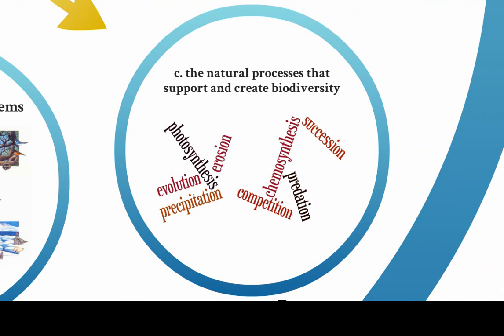It's that variety that's so important to the earth as a complete ecosystem. When we talk about biodiversity, we also include the natural processes that support and create biodiversity — things like competition, photosynthesis, succession, predation, and physical processes like precipitation and erosion. All these things are going to shape what species occur in a particular area.